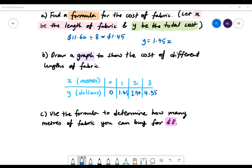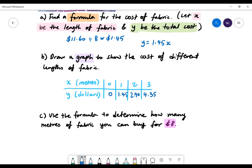Use the formula to determine how many metres of fabric you can buy for $8. We'll need our equation: Y equals 1.45 multiplied by X. $8 represents the total cost, so it represents our Y value. Substitute 8 into Y, so we're left with 8 equals 1.45 multiplied by X.